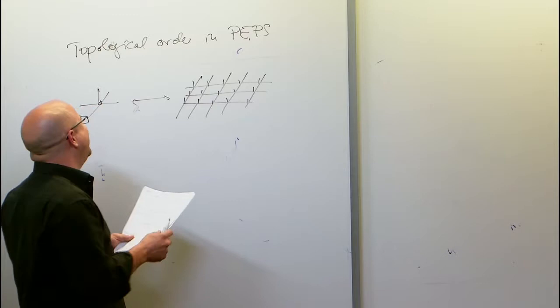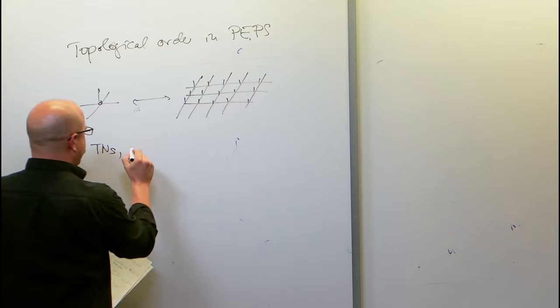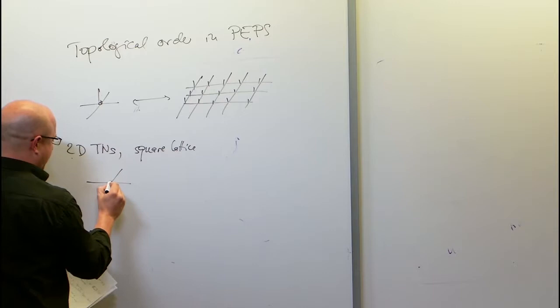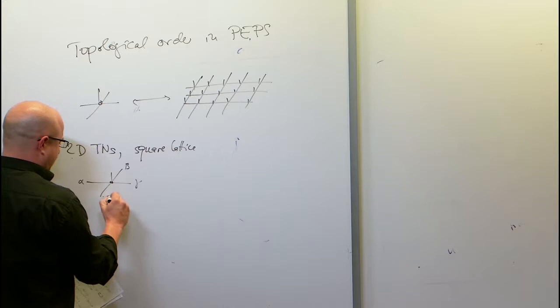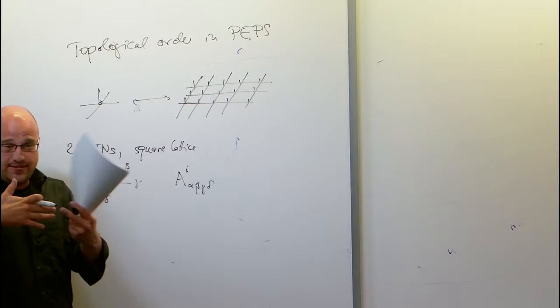In my talk, I will consider two-dimensional tensor networks on the square lattice. I will typically denote the tensor as a bubble with five legs: auxiliary legs alpha, beta, gamma, delta, and a physical leg. So we have tensor A with indices alpha, beta, gamma, delta. Whenever we connect legs of a tensor, it means we identify the corresponding index and sum over it.